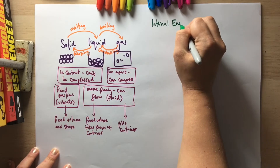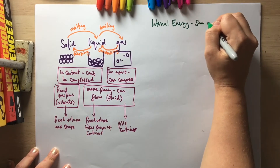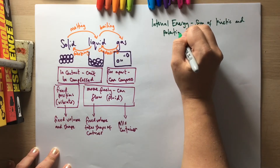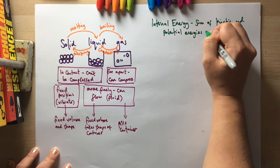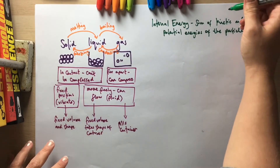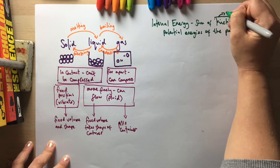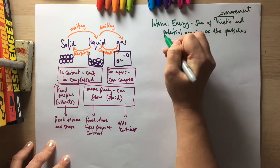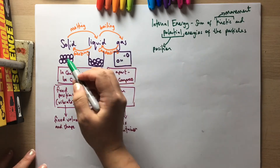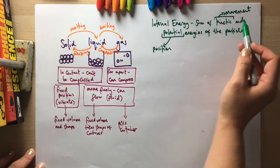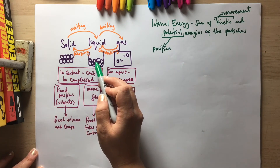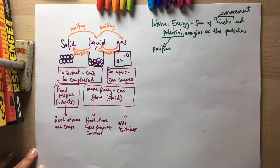There is something called internal energy, and this is the sum of the kinetic and potential energies of the particles. By kinetic energy we're talking about their movement, and by potential energy we're talking about their position. So these particles in a substance — how much are they moving? Here they're very close together, then they start to move around more, and in a gas they're moving very far away from each other.